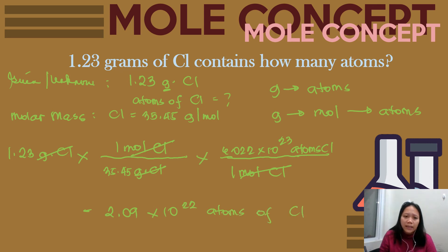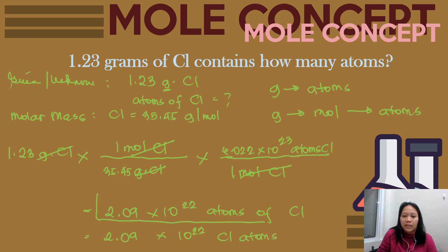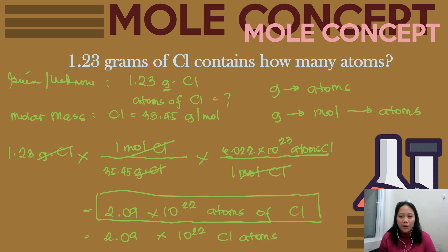You can write the answer as 2.09 times 10 raised to 22 atoms of chlorine, or equivalently, 2.09 times 10 raised to 22 chlorine atoms. Either form is accepted. That is the last problem.